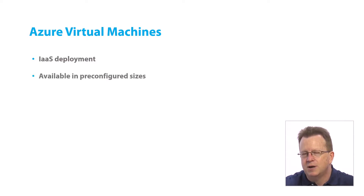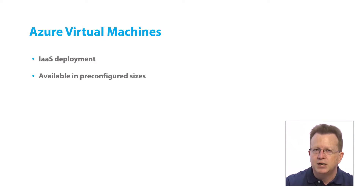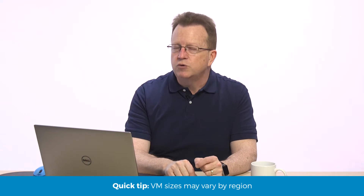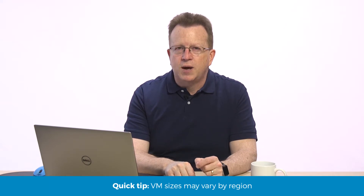In addition to that, what you need to understand about Azure VMs is that there really are pre-configured sizes. In another video, we'll take a look at all of the different virtual machine sizes that are available. You do not have the ability to decide, for example, that you want four cores, 20 gigs of RAM, and 16 NICs. You can't choose from column A, B, or C. There are pre-configured size virtual machines, and you simply choose which size you want.